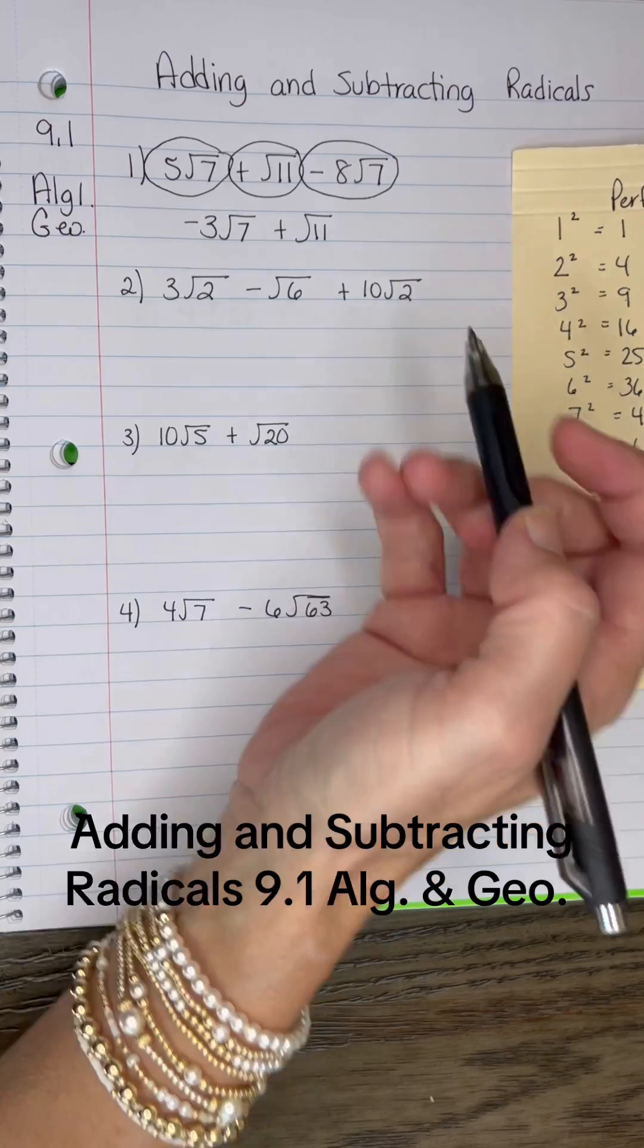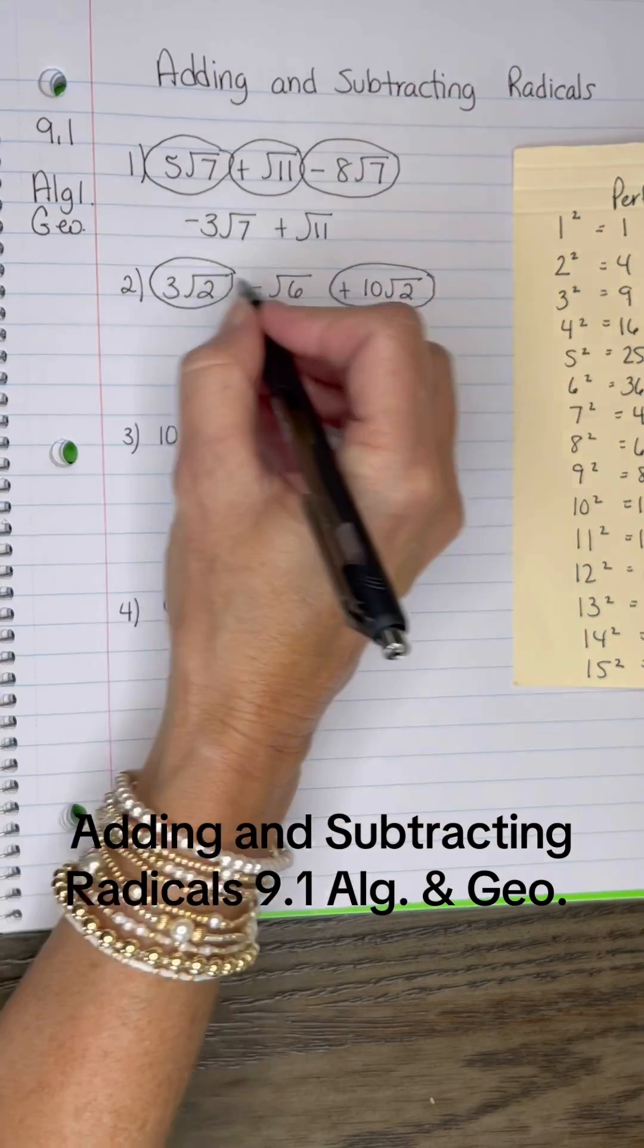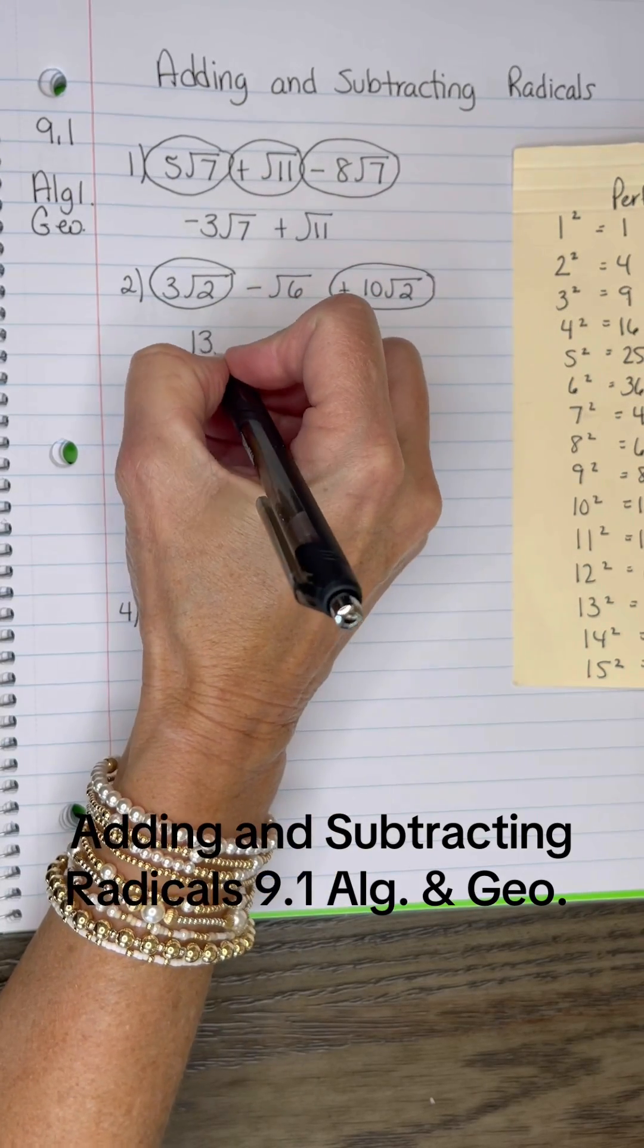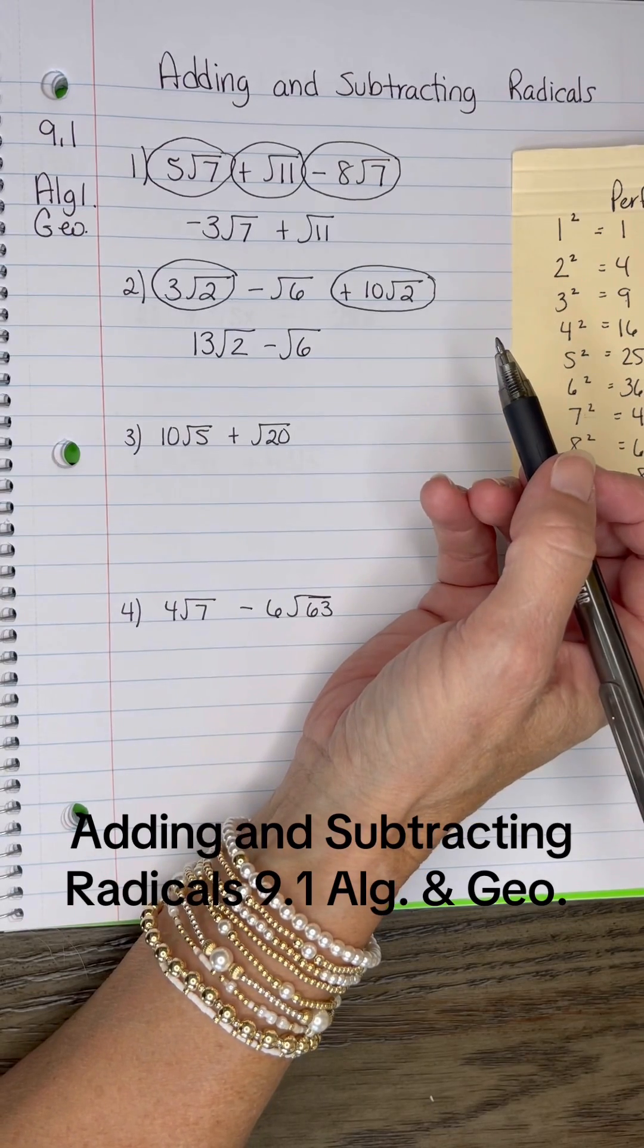On this one right here, we have a 3√2 that is like the 10√2. So 3 plus 10 is 13√2 minus √6. Nothing simplifies other than that.